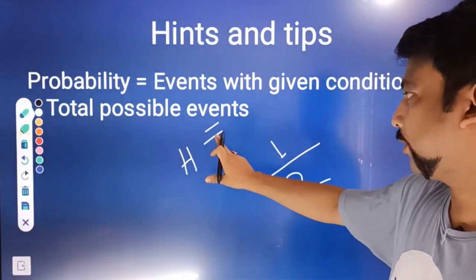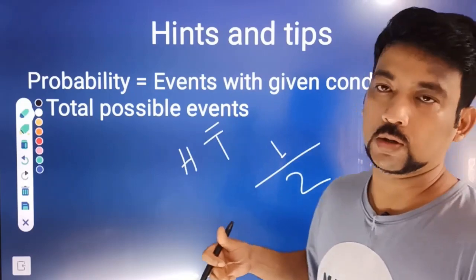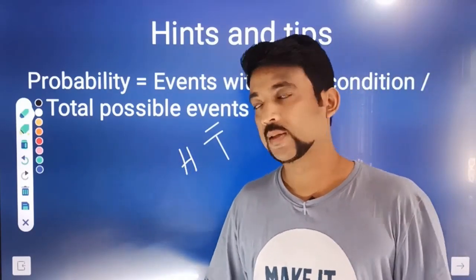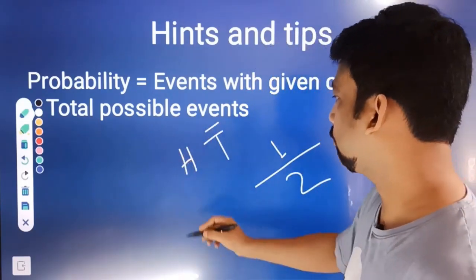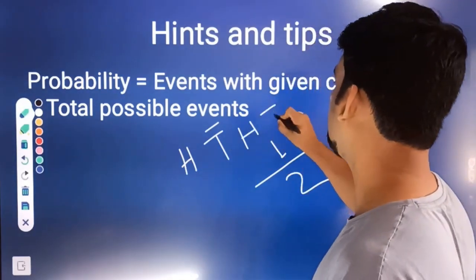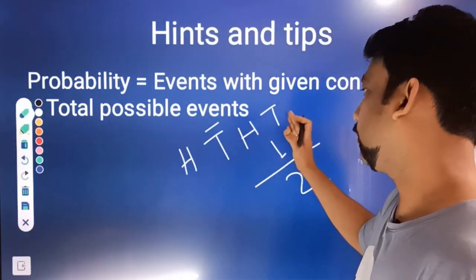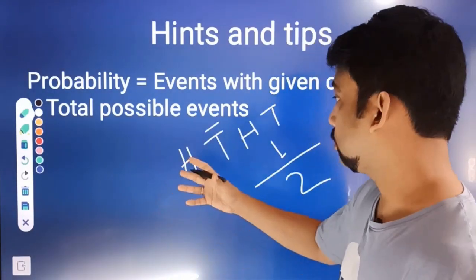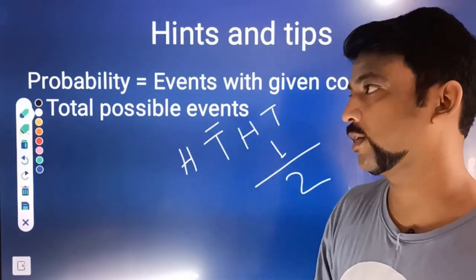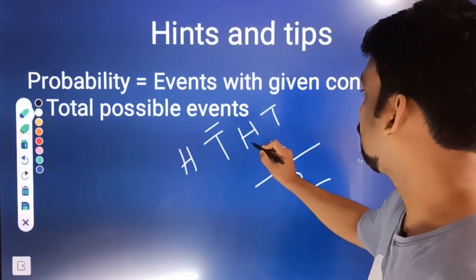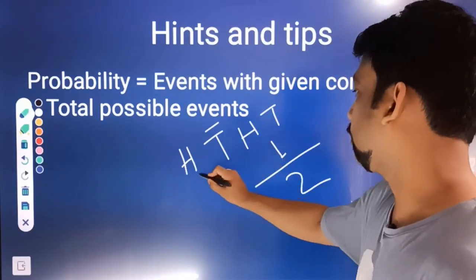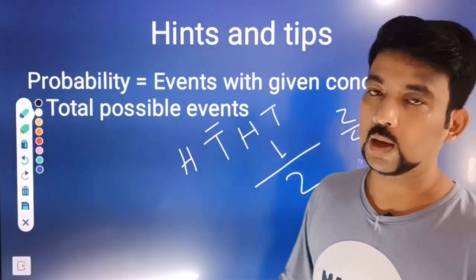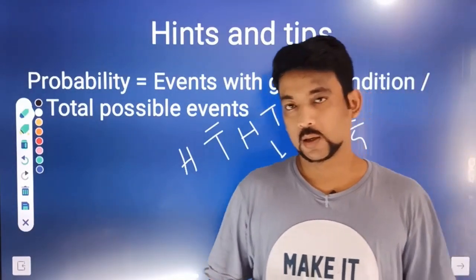Your probability of getting a tail from one coin toss is 1 by 2 or 50%. In this case, your probability of getting a 2 by 4 is 1 by 2.